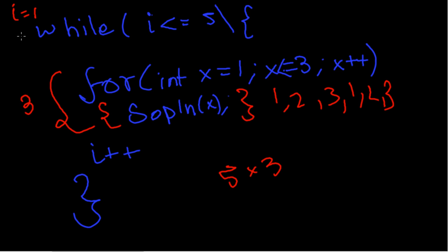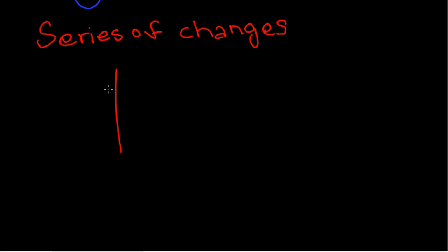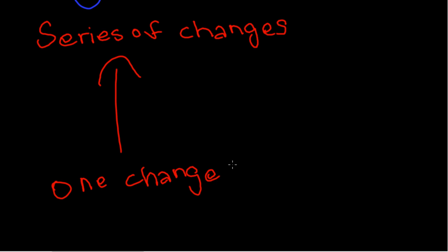x would be printed 5 times 3 — that's 15 times — because the for loop would be executed three times for every one execution of the while loop. Coming back to the important point: one change in the while loop leads to a series of changes in the for loop. The for loop goes three times for every one iteration of the while loop.